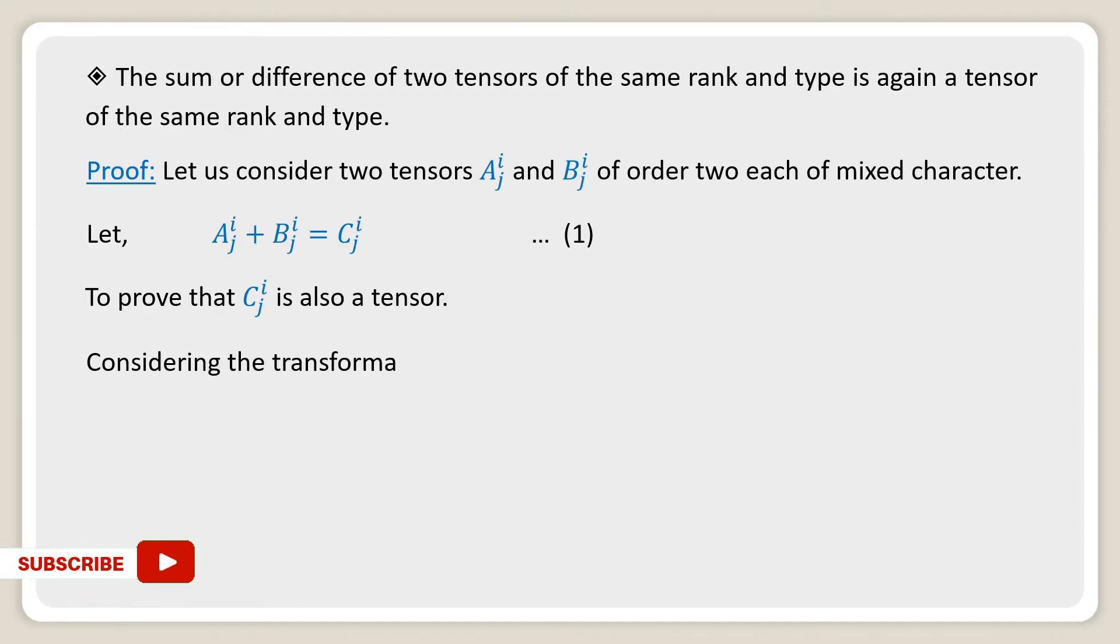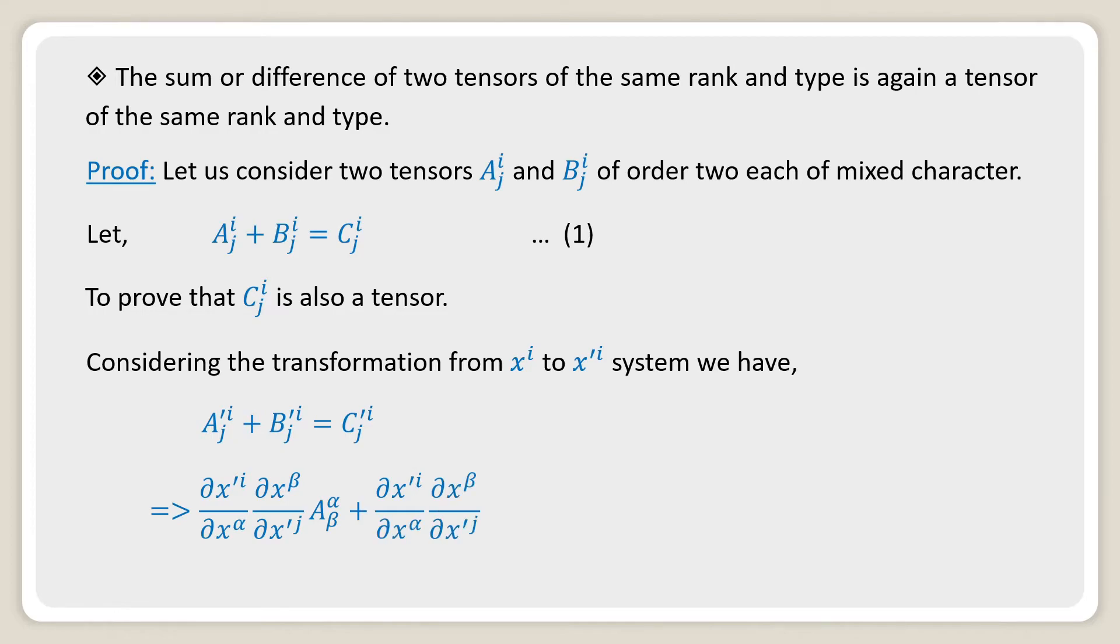Considering the transformation from x^i to x'^i system, we have A'^i_j plus B'^i_j equals C'^i_j, which implies (∂x'^i/∂x^α)(∂x^β/∂x'^j)A^α_β plus (∂x'^i/∂x^α)(∂x^β/∂x'^j)B^α_β equals C'^i_j.